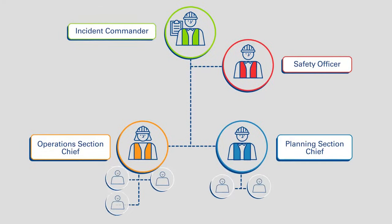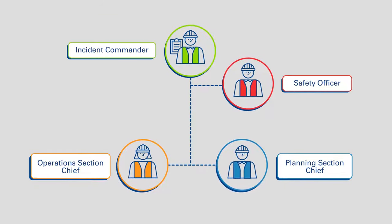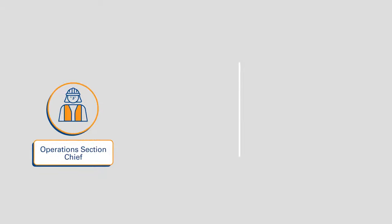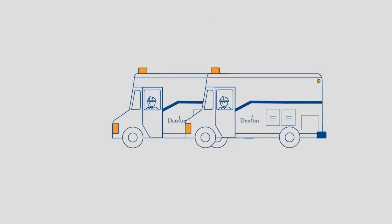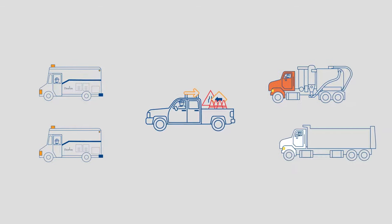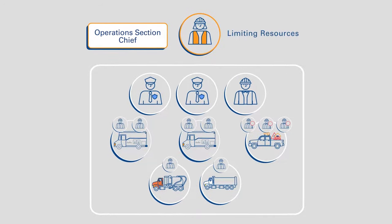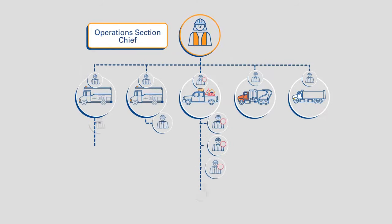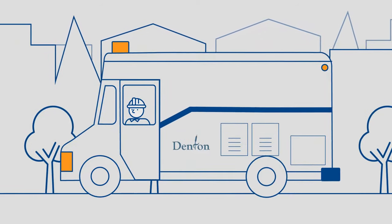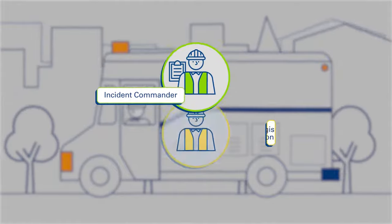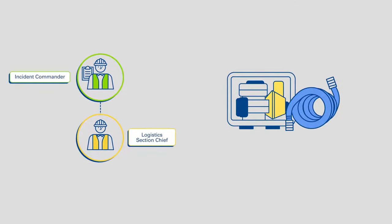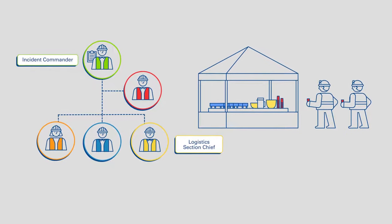The organizational structure can expand and contract based on additional resources and incident complexity. As additional resources arrive, the operations section expands quickly to include two more crews, a traffic control team, and several pieces of heavy equipment. To ensure safety and accountability, effective span of control needs to be maintained — limiting the number of resources that report to each supervisor. Within ICS, span of control should be three to seven people reporting to one supervisor. As resources arrive on site, the incident commander appoints a logistics section chief to manage resources such as supplies, equipment, and food. This person wears a yellow vest.